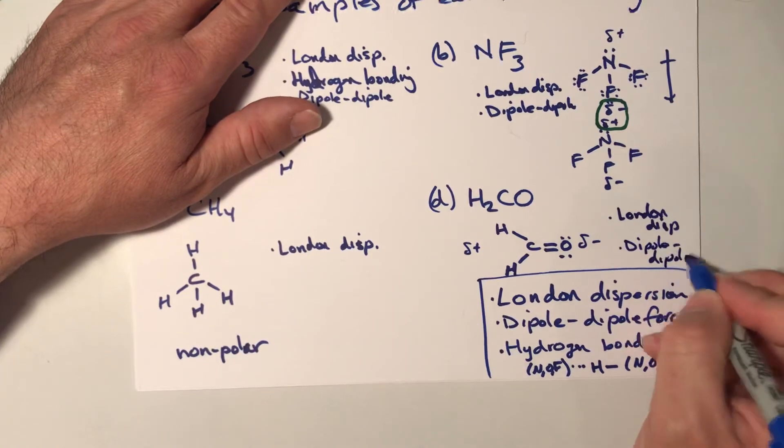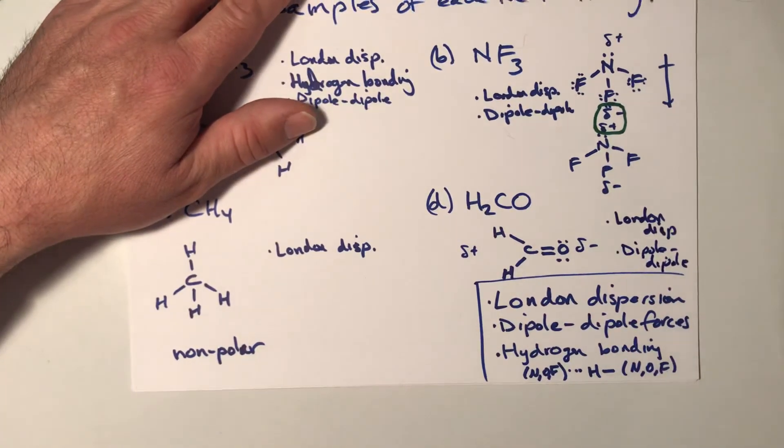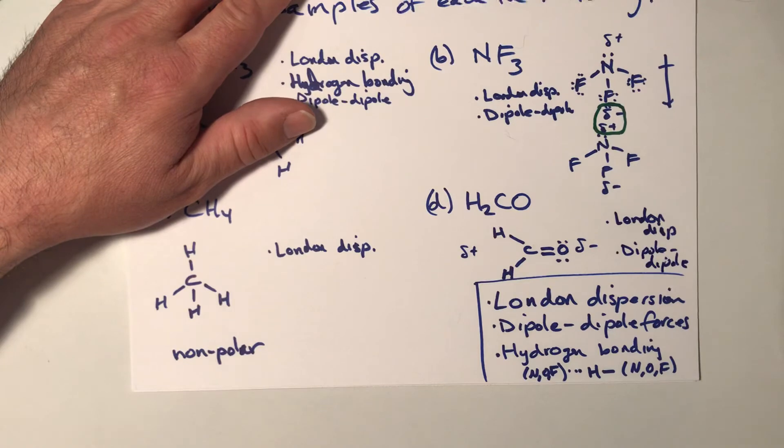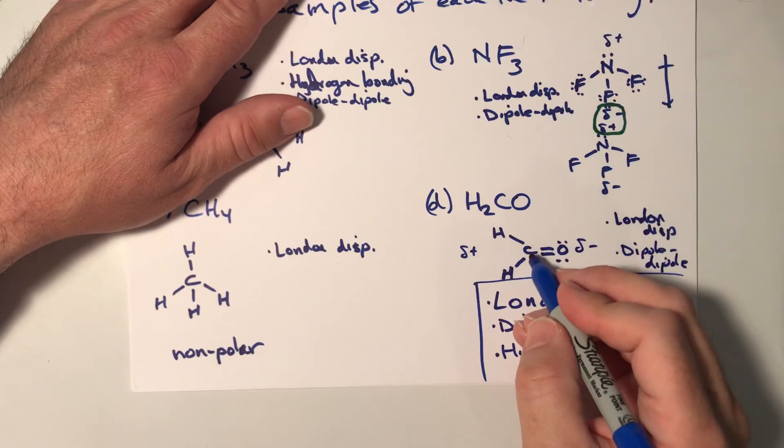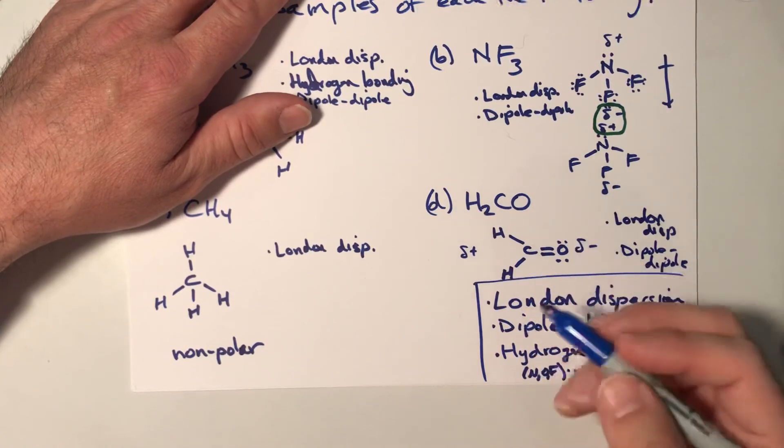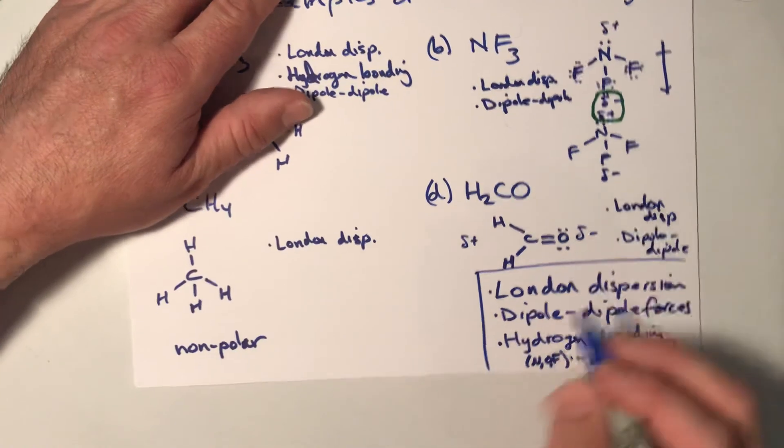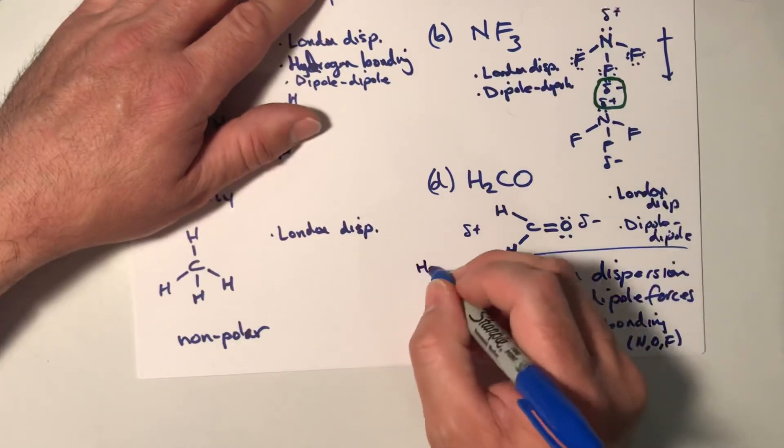All right. It's tricky, but this one does not exhibit hydrogen bonding. Both of the hydrogens are covalently bonded to a carbon. So there's no way to have a hydrogen in between an oxygen and another oxygen.